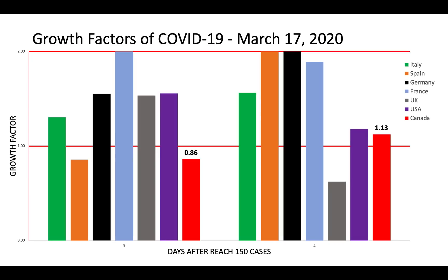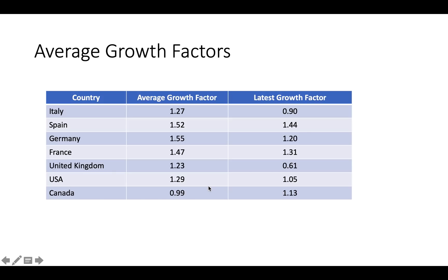Here are the growth factors for COVID-19 as of March 17, 2020. For Canada, the growth factor was 0.86 on day three and is now at 1.13. Every single country's average growth factor other than Canada — and we're still early — is above one. The latest growth factors: Canada is 1.13, USA 1.05, England is lower at 0.61 though that depends on whether all cases are being reported. France, Germany, Spain, and Italy — Italy seems to have tailed off a little bit and their growth factors are now right around one.